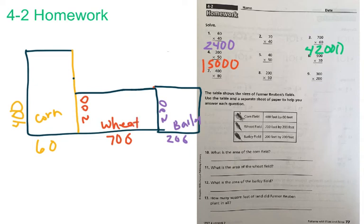Now, number 10 asks us, what is the area of the cornfield? So we can see in our drawing that our cornfield is 400 feet by 60 feet. And in order to find area, we remember, we practiced this quite a bit at the beginning of the year, area is equal to length times width.